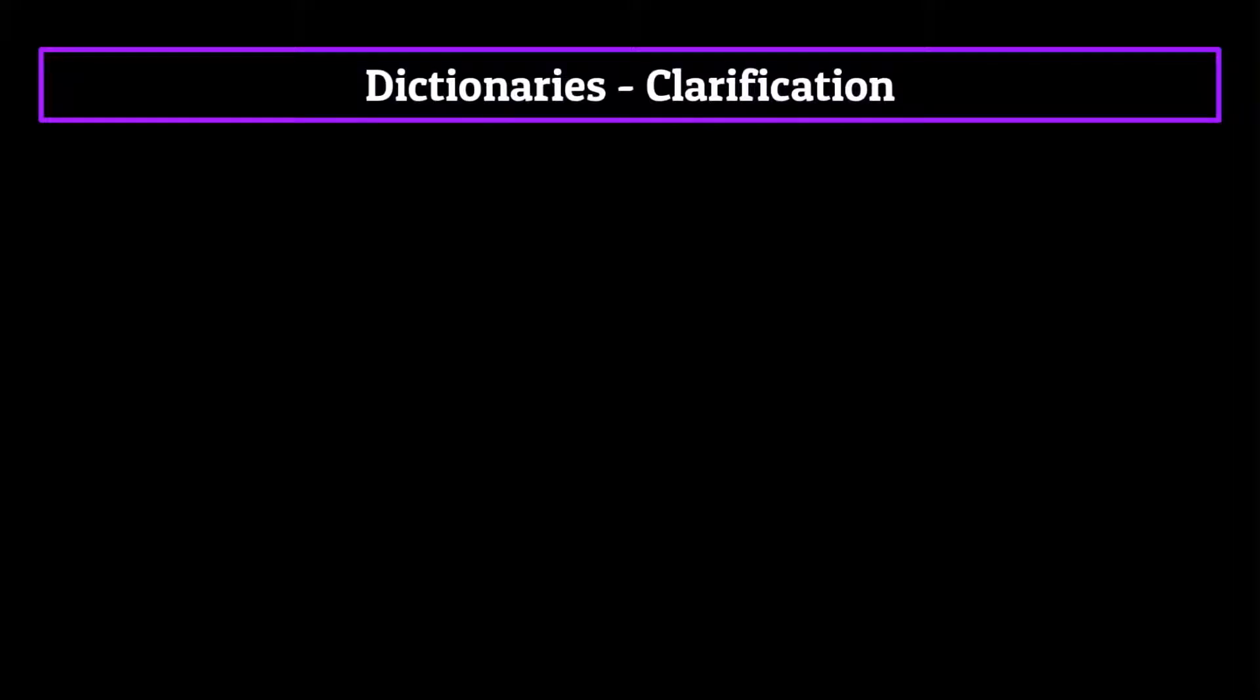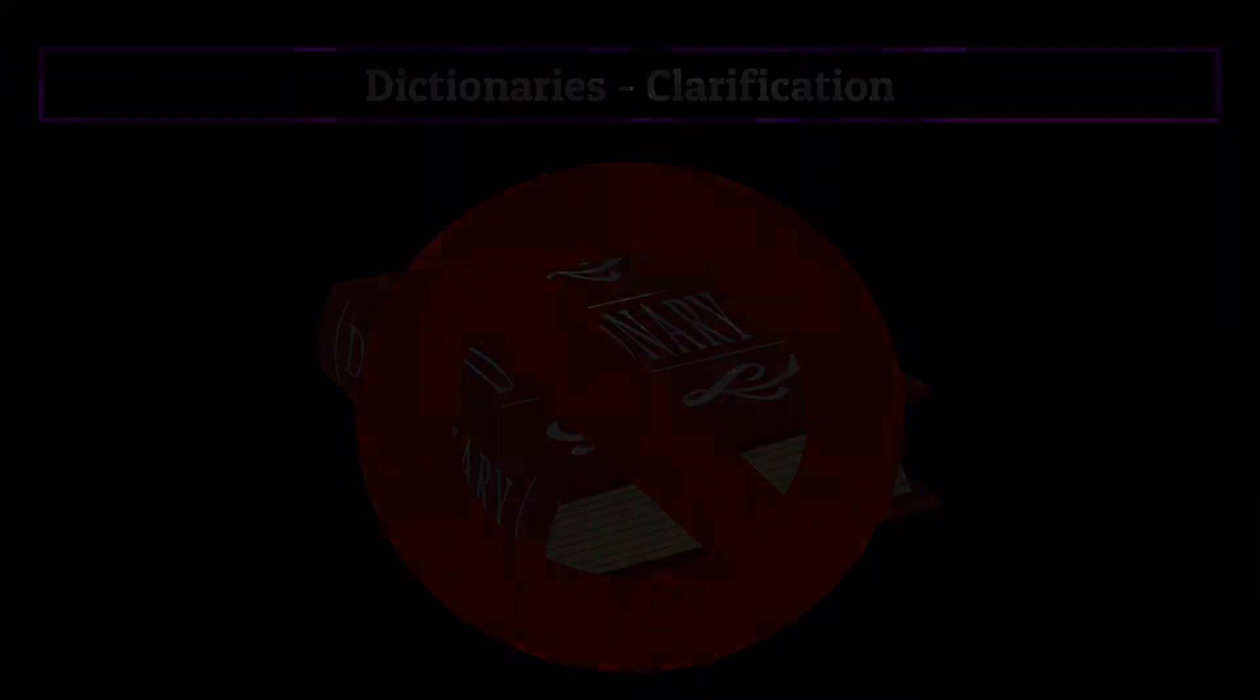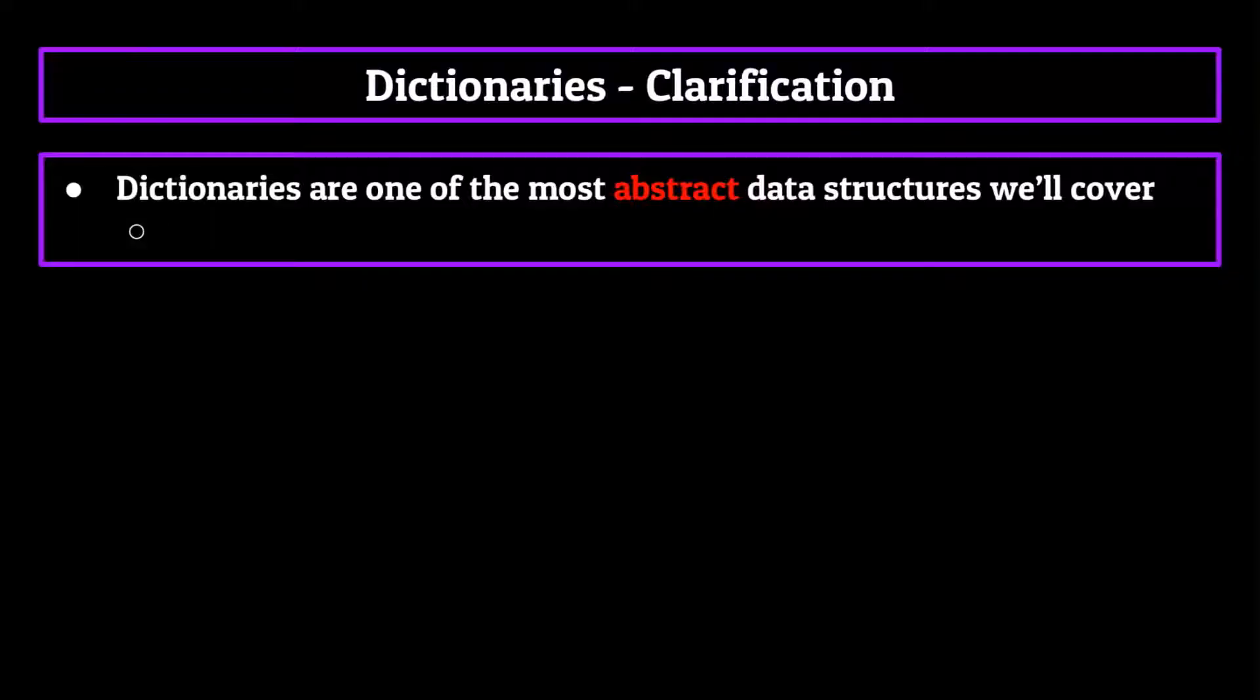Alright, so before we get too far, we should probably clarify that when we say dictionary, we're not referencing that thick book you probably have lying around in your house somewhere and haven't used in years. Actually, dictionaries are one of the most abstract data structures which exist in computer science and can be used for a variety of purposes.